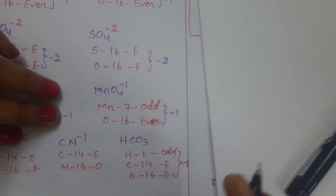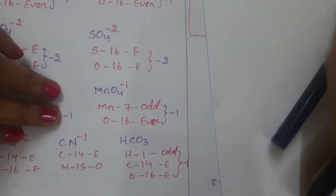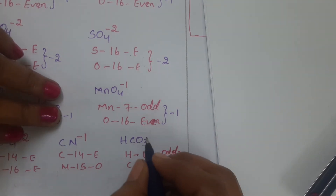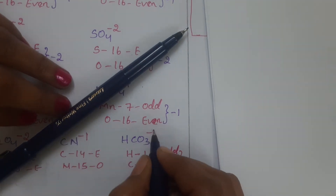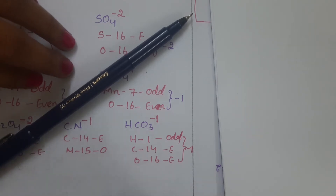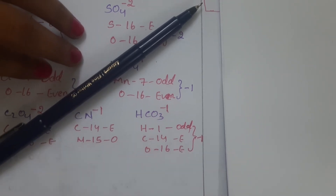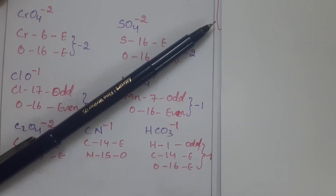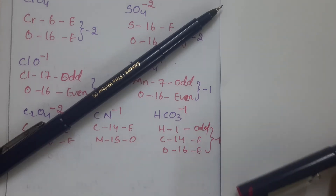To summarize: if any one of the atoms belongs to an odd-number group, that polyatomic ion gets minus 1 as its charge. If all atoms belong to even-number groups, we write minus 2. So in this way we can write the charges on polyatomic ions. Now let us see the one exceptional case.